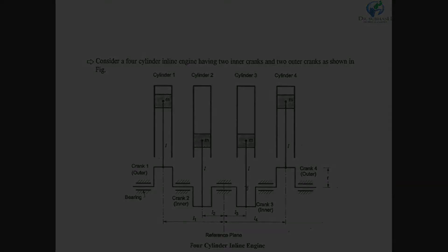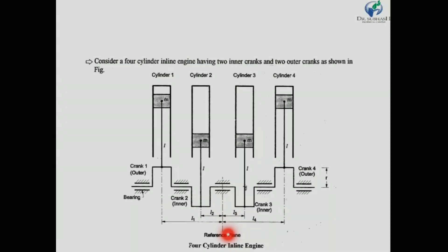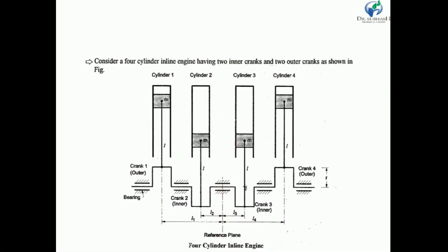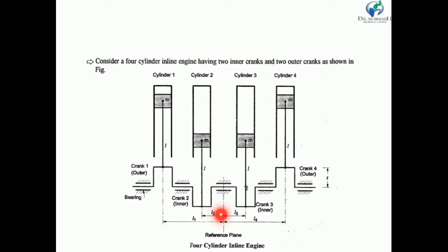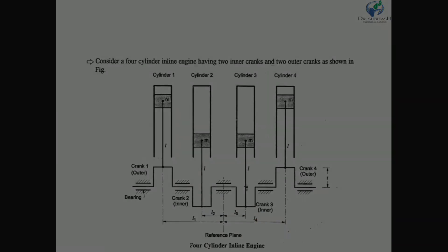As shown in the figure, at the center we have considered one reference plane. From the reference plane, the center line of cylinder 1 is placed at distance L1, the center line of cylinder 2 at distance L2, the center line of cylinder 3 at distance L3, and the center line of cylinder 4 at distance L4.